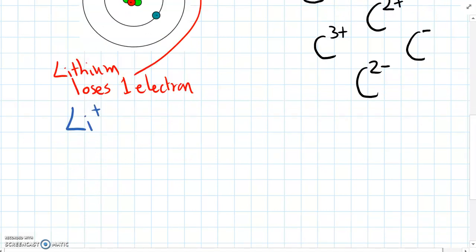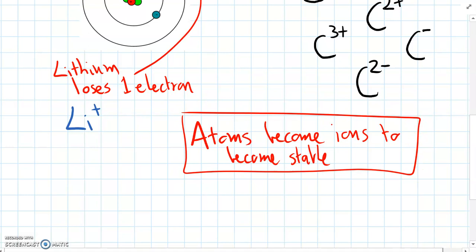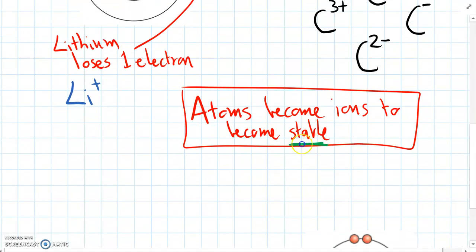And what we've discovered about ions is that the atoms become ions so that they can become stable. And we've figured out that stable actually means that they have a full outer shell of electrons.